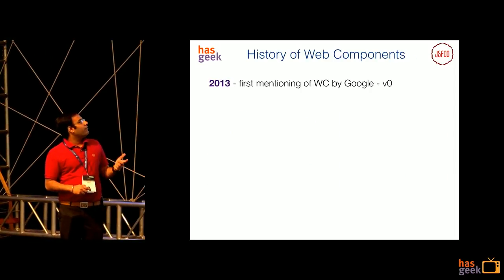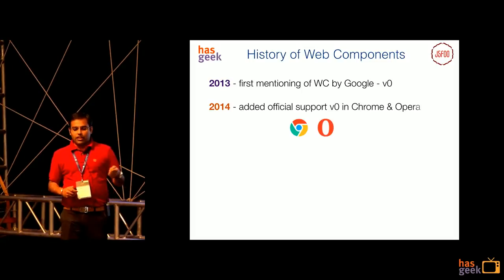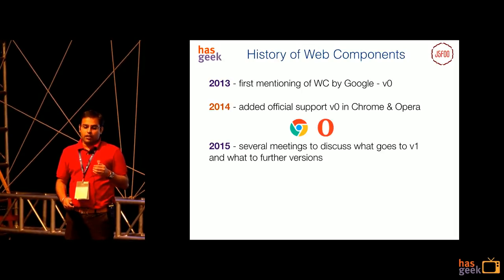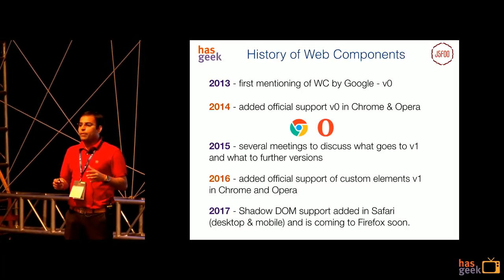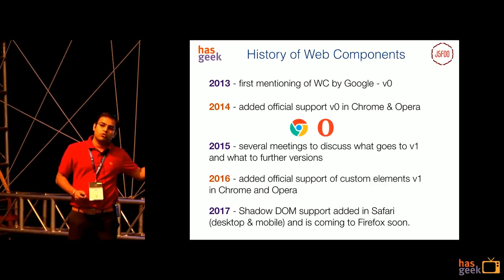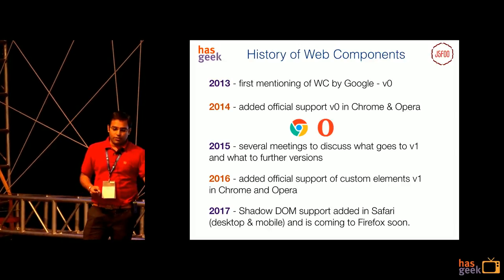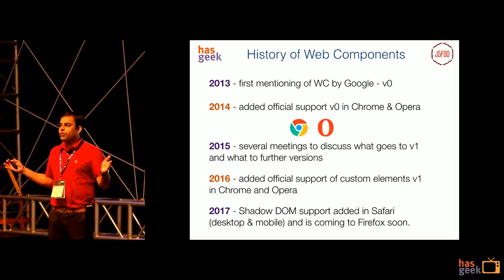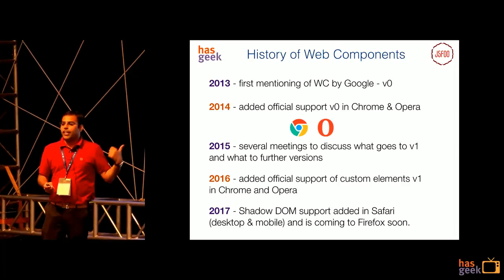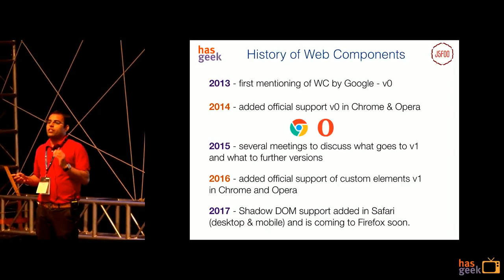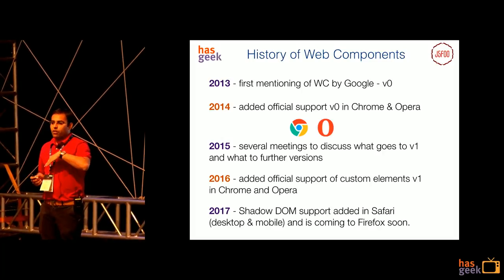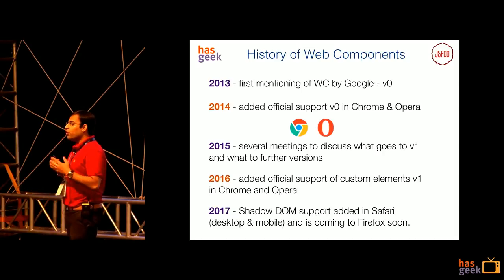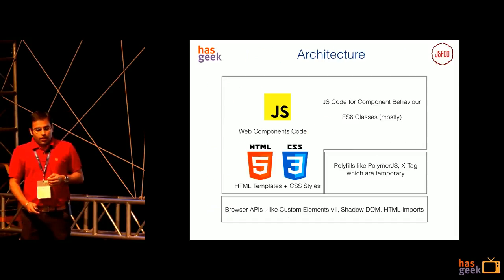Let's go into some of the history of web components. Web components, although it has taken like 4 years to come into normal picture, in comparison to HTML5 which took 10 years to come into production, it is still a good amount of time and you should try to utilize this. It was introduced by Google, then all the community came on board. In 2016, officially in most of the browsers the v1 custom elements spec was added, and in 2017 the shadow DOM is also natively supported by most of the browsers.